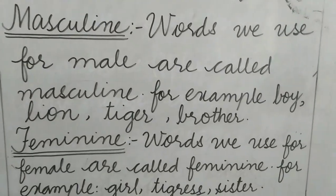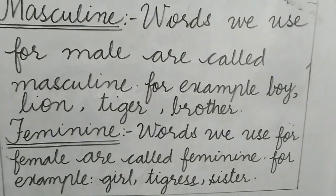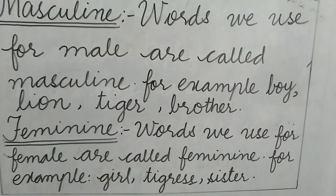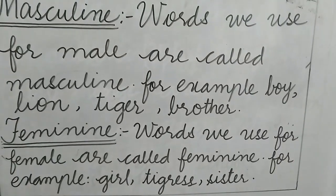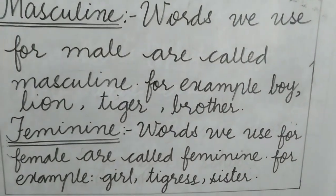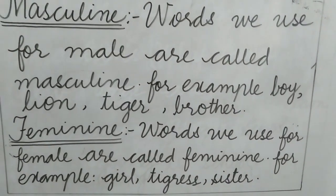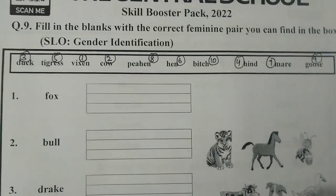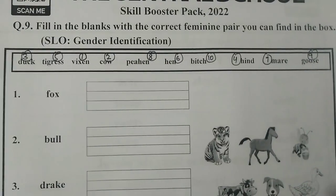And the next is feminine. What is feminine? Words we use for female are called feminine. For example: girl, tigress, and sister. Let's start our question number 9.